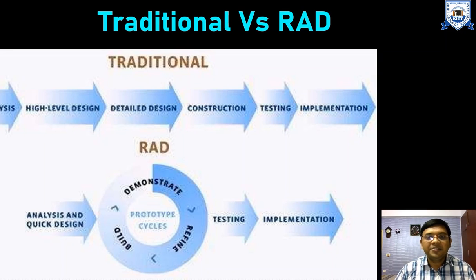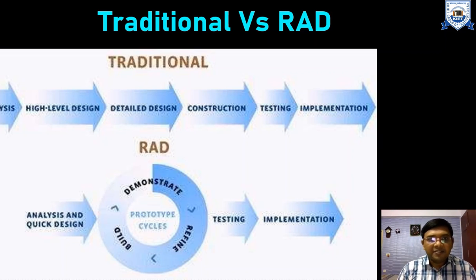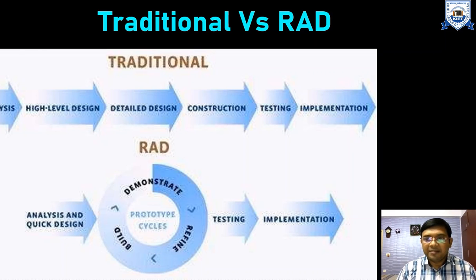What is the difference between traditional and RAD model? Traditionally, we follow sequential steps in the development lifecycle like analysis, high-level design, detailed design, construction, testing, and implementation. But in RAD, we generally follow analysis of requirements and making a quick design, then simultaneously building a demonstration, refining and building the prototype, then testing and implementation. In this manner, we do the development in an incremental phase. For each increment, we go for analysis and quick design, then demonstrate, refine and build prototypes, then testing and implementation.